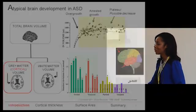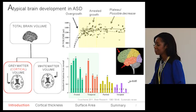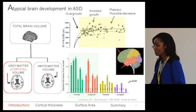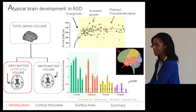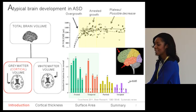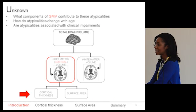Good morning everyone. I'll start by talking about the neurobiology of autism spectrum disorders. Atypical brain development has been suggested in ASD. A paper published in 2001 looked at total brain volume in individuals with autism and typically developing individuals between the ages of 2 to 16, and found an early period of overgrowth between ages 2 to 4, followed by arrested growth and then a plateauing and possible decrease in total brain volume. At this level of anatomy, it's difficult to know what may be contributing to these atypicalities.